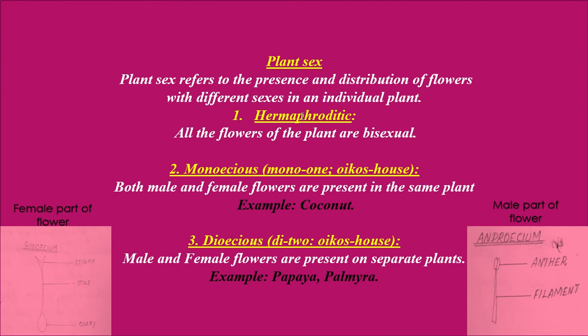The first type is hermaphrodite. All flowers of the plant are bisexual. If the plant possesses bisexual or perfect flowers — that means a flower contains both androecium and gynoecium — then those flower-bearing plants are said to be hermaphrodite.